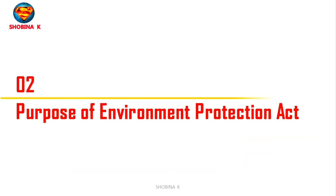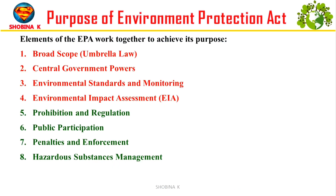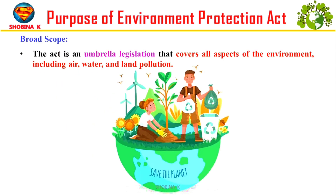Now let's understand the purpose of EPA. This act follows UN decisions — it does what the UN says about the environment. It keeps the environment safe and prevents things that could harm people, animals, plants, or natural resources. These elements of EPA work together to achieve its purpose of protecting and improving the environment, preventing hazards, and implementing international environmental agreements. First: broad scope — EPA acts as a comprehensive framework or umbrella law for environmental protection, covering a wide range of issues from air and water pollution to land pollution.